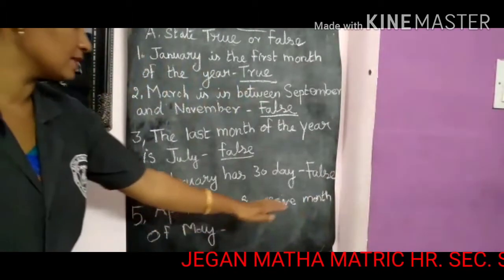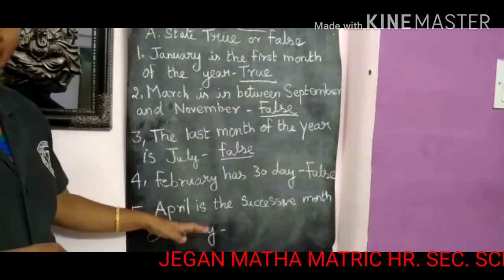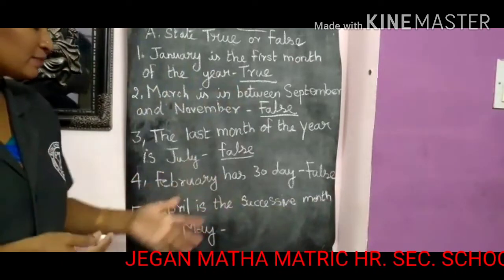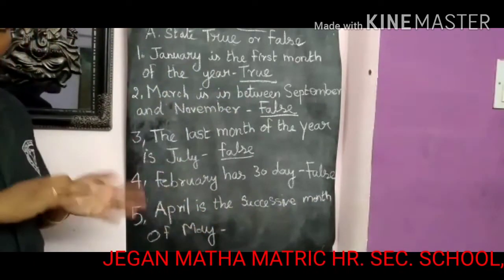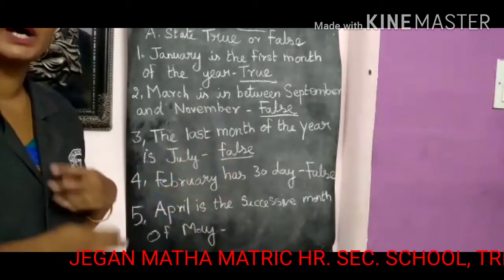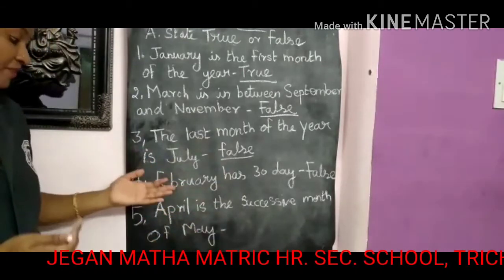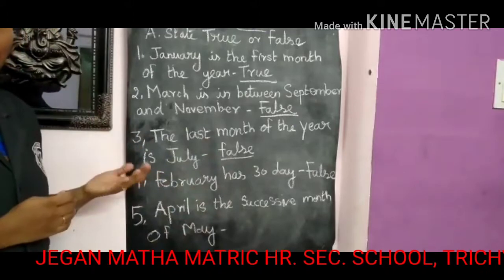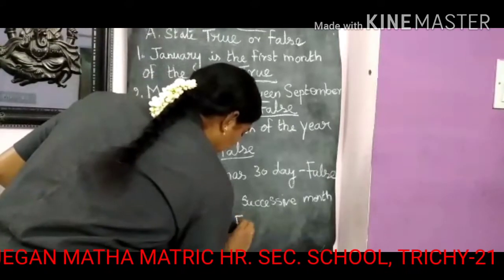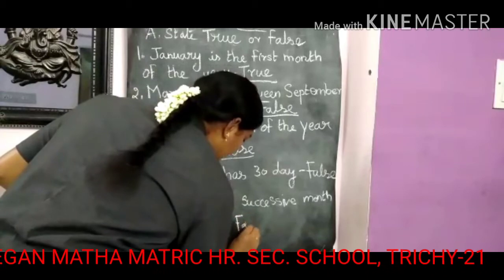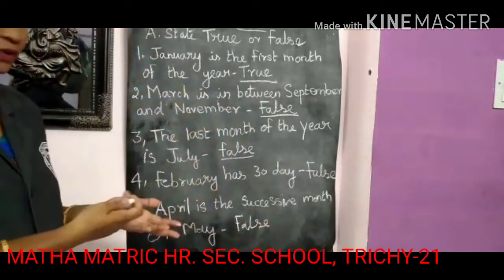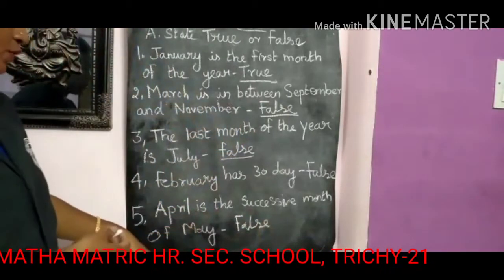Fifth question: April is the succeeding month of May. No — succeeding month means the month that comes after. May comes after April, not the other way around. After May comes June. So this sentence is also FALSE.